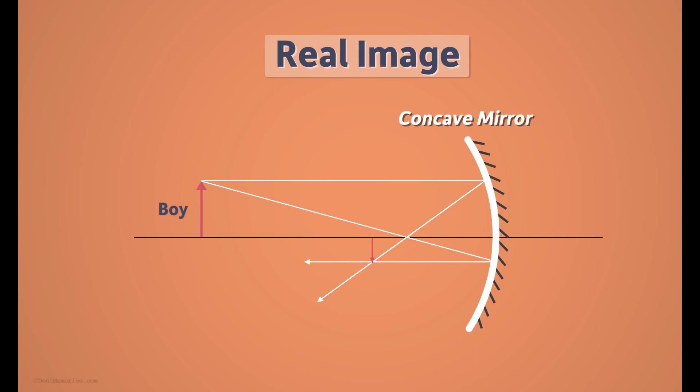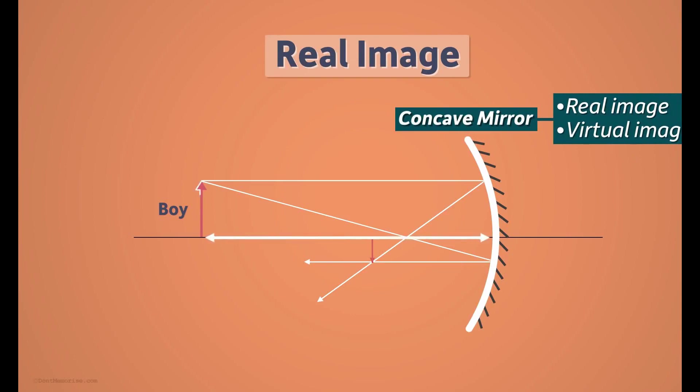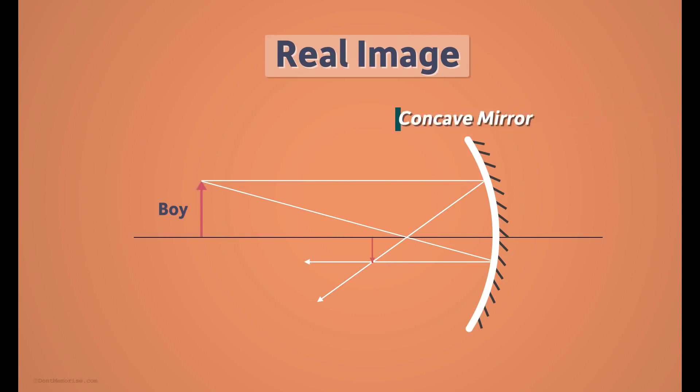I mentioned earlier that concave mirrors form real images. In fact, they form both real and virtual images. And what does it depend on? It depends on the distance of the object from the mirror. We will learn more about the real images formed by concave mirrors in our future videos.